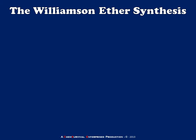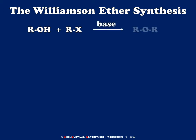The Williamson Ether Synthesis can be thought of as the reaction between an alcohol and an alkyl halide under basic conditions to create an ether. What really goes on here is we take the R groups from the alcohol and the alkyl halide and join them to a bridging oxygen — combining the R group from an alcohol with the R group from an alkyl halide.